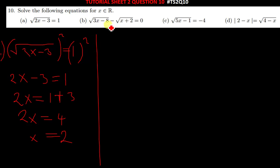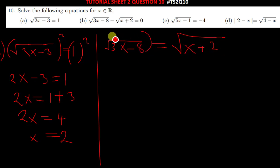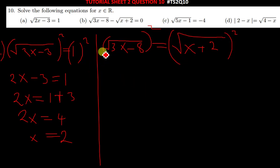Part (b) has the square root of 3x minus 8. We take the other part to the other side of the equal sign, giving us the square root of 3x minus 8 equal to x plus 2. Again, we square both sides and then solve the equation.